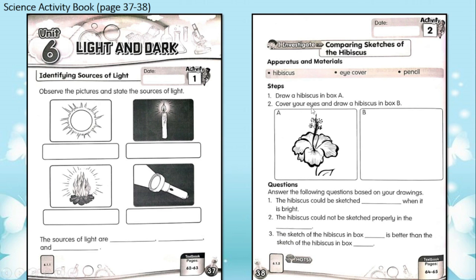For step two, cover both of your eyes and draw a hibiscus in box B. With your eyes closed or covered, try to draw it in box B. Do not cheat! It doesn't matter if it's not perfect — just try your best. Then answer the questions based on your two drawings.